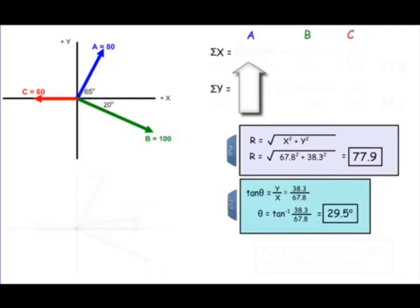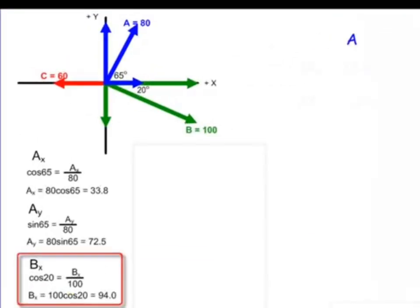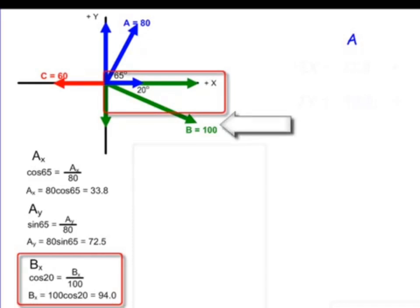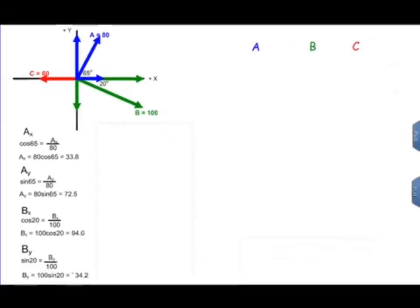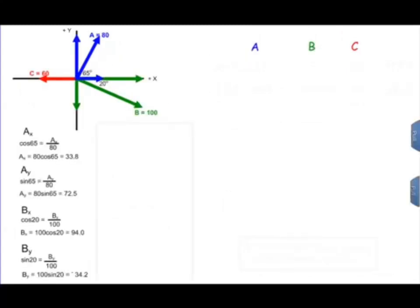For the x component of vector b, cosine 20 equals the adjacent leg — the x component of b — divided by the hypotenuse, 100. So b sub x equals 100 cosine 20, which is 94.0. You then build your table with columns a, b, and c. The sum of the x's equals 33.8 plus 94 plus negative 60, giving 67.8. For the y components, sine 65 equals opposite over hypotenuse, where the opposite leg is the y component of vector a.